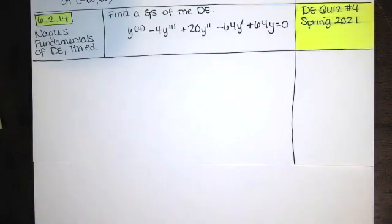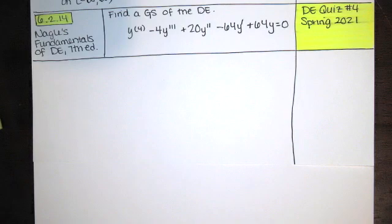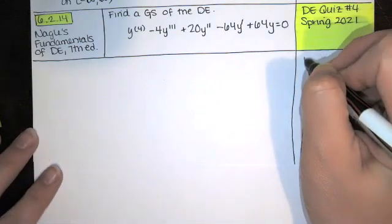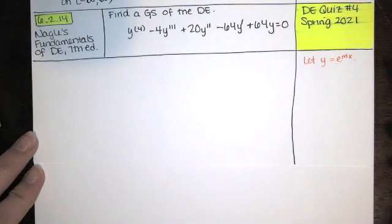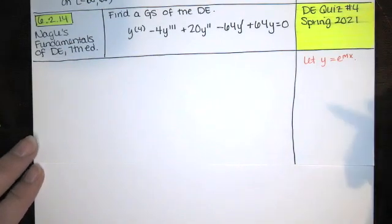In this video, we solve problem 6.2.14 from Nagle's Fundamentals of Differential Equations, 7th edition. We're asked to find the general solution of a constant coefficient homogeneous linear differential equation. It's fourth order. This appeared on quiz number four for differential equations in one of the forms of the quiz.